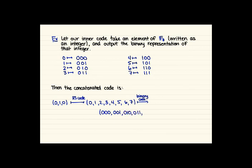4 is 100, 5 is 101, 6 is 110, 7 is 111. So just taking each of those entries and encoding them using our second inner code.